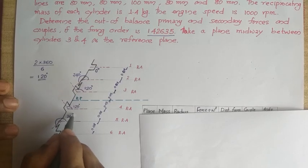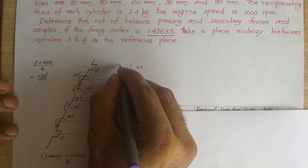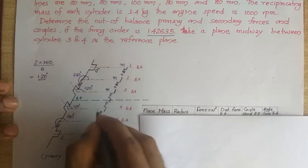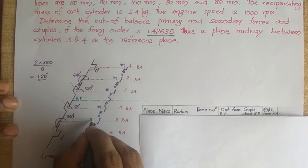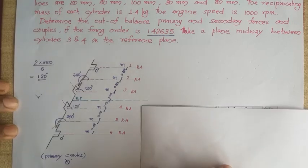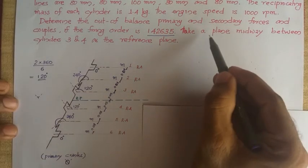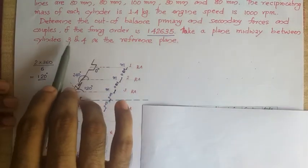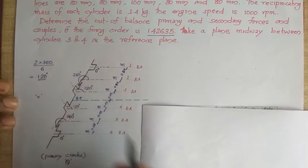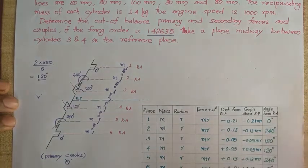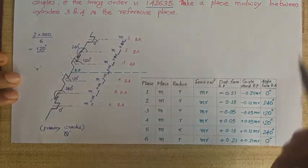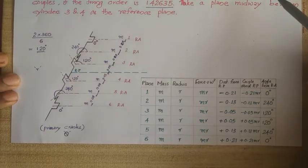These are the crank angles for all 6 cylinders. Each cylinder has the same reciprocating mass and the same crank radius R, which is common for all cylinders. The plane midway between cylinders 3 and 4 is taken as the reference plane. From the primary crank diagram, we determine whether there is any out-of-balance primary force and couple.